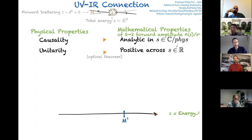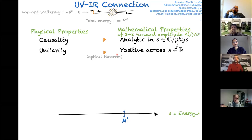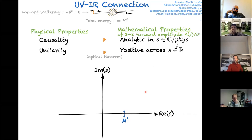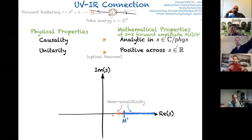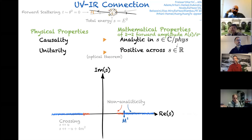Causality implies that the forward amplitude is analytic in s in the complex plane, up to physical singularities associated with the exchange of particles. Unitarity implies, through the optical theorem, that the amplitude is positive across the real axis. In the complex s-plane, non-analyticities lie on the real axis — the red ones associated with particle production in the EFT, the blue ones associated with UV particle exchange. Crossing symmetry gives a similar structure on the negative real axis, and there is a pole at the origin from dividing the amplitude by powers of s.